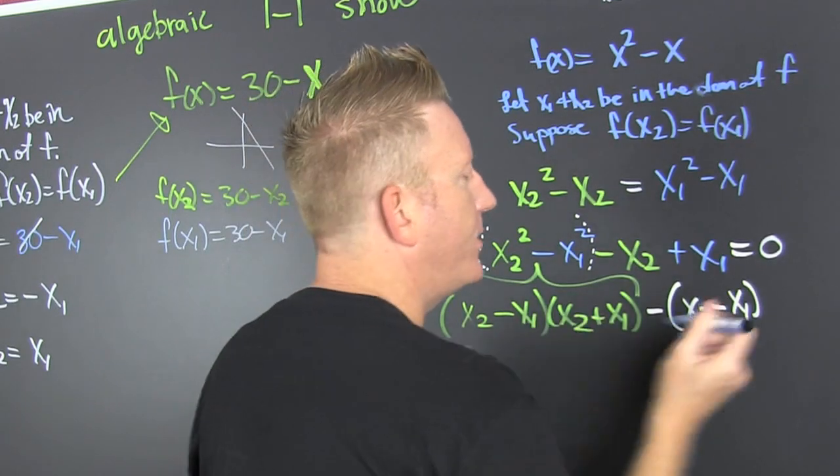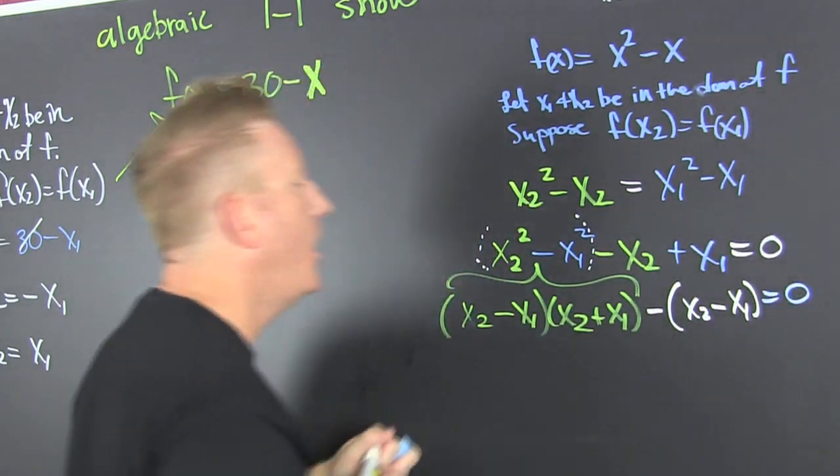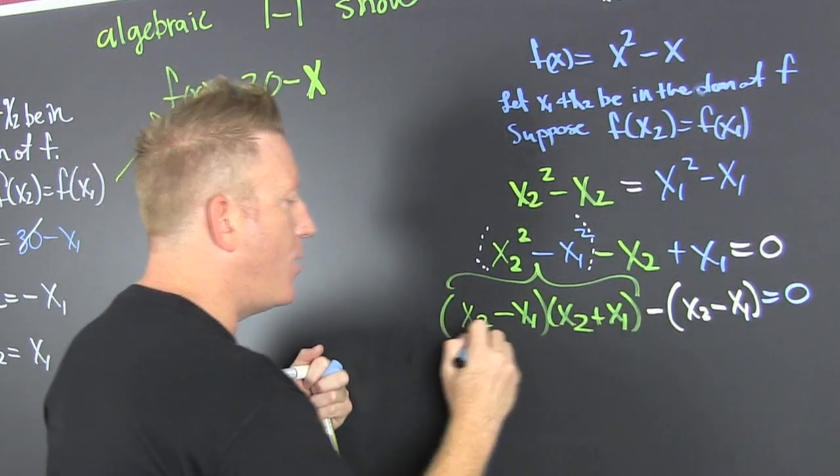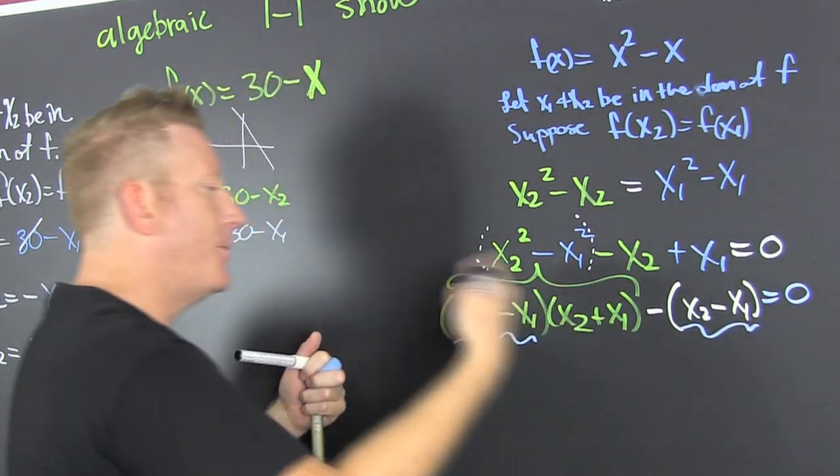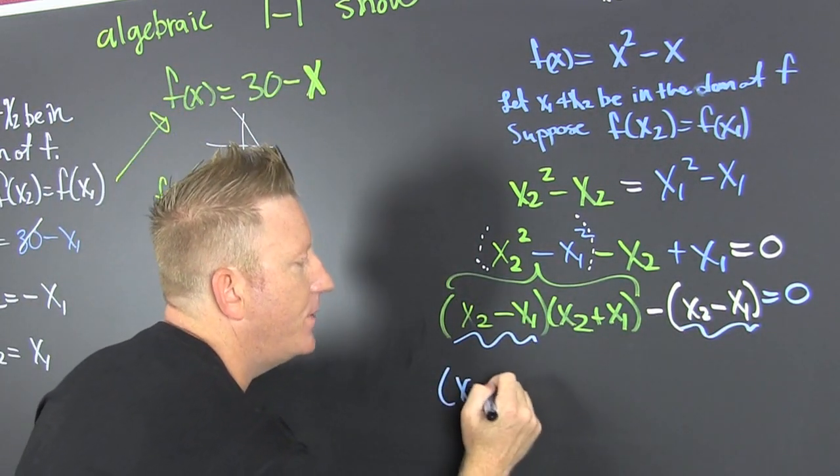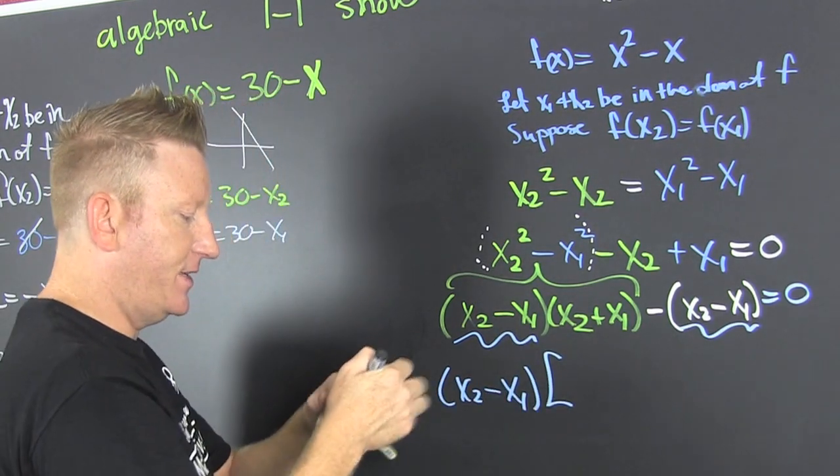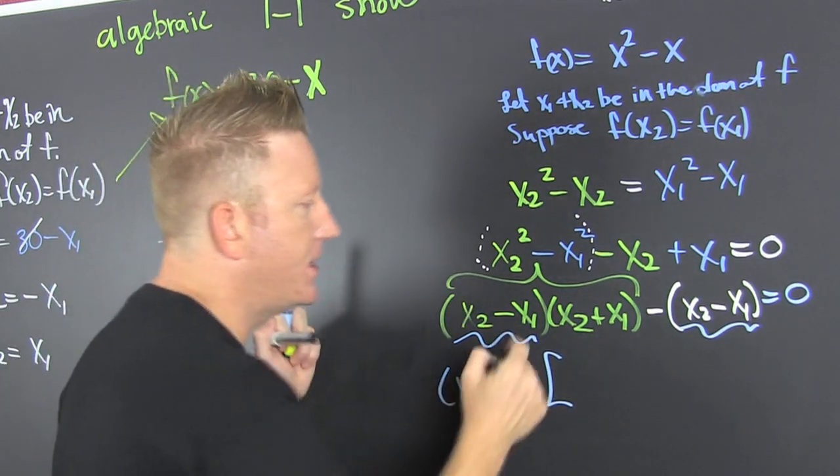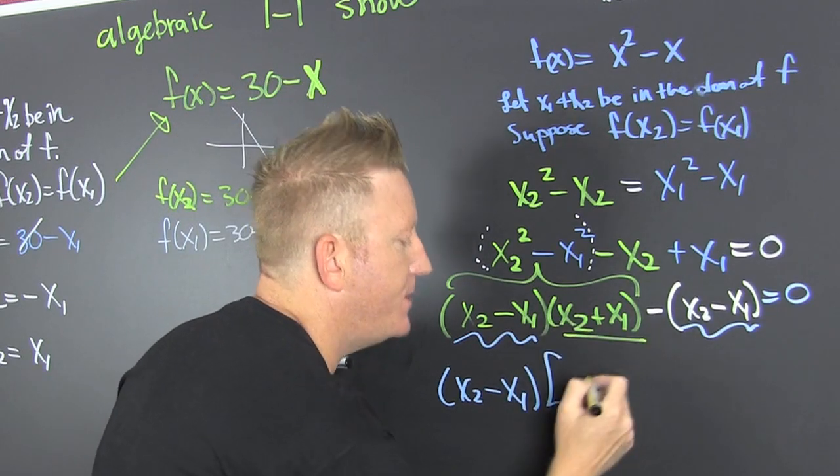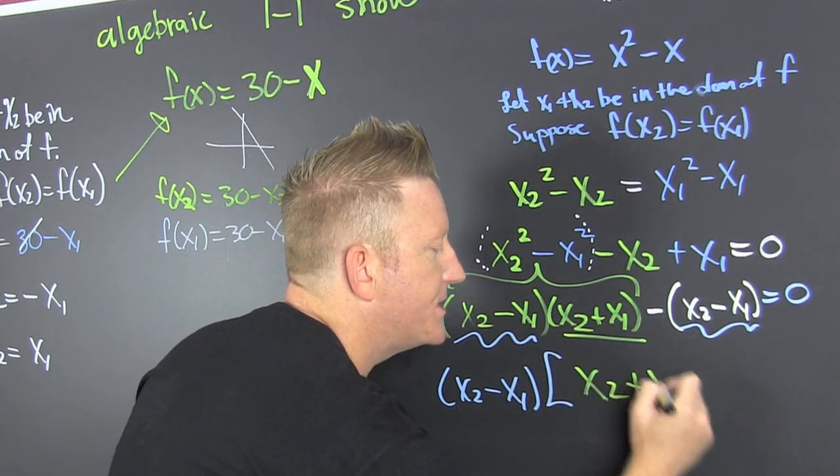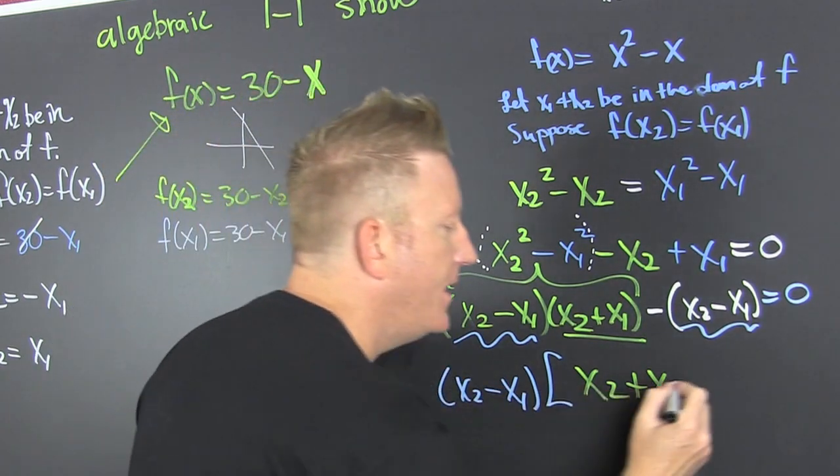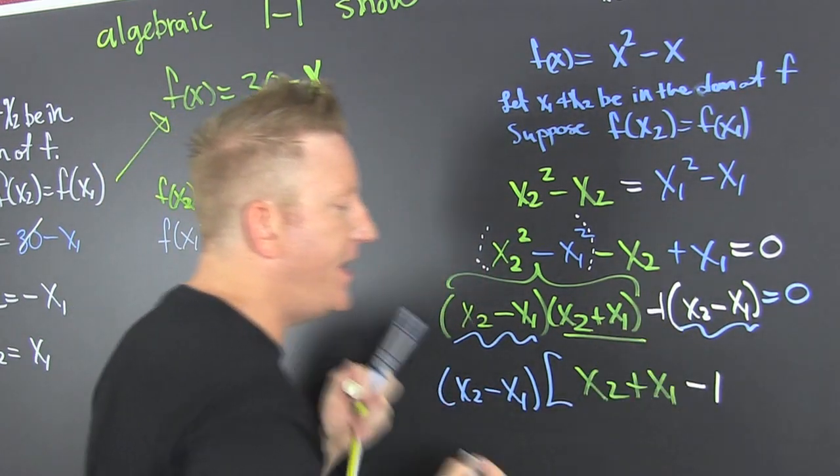Why did you do that? Because I haven't set it equal to zero, and I'm trying to use my zero factor property. All right. Now, I see that those two are the same, and I'm going to factor it out. So that's an x2 minus an x1. All right. And then leftovers on the inside. I write the leftovers. That's this business, x2 plus x1, and then that's minus the one that's in front of there.